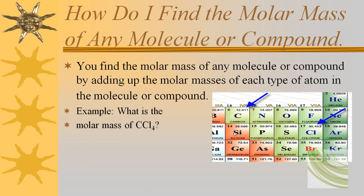Elements are pretty easy to find the molar mass of. What about compounds? In order to find the molar mass of a compound, you have to do a little bit more work. You find the molar mass of any molecule or compound by adding up the molar masses of each type of atom in the molecule or compound. For example, what is the molar mass of CCl4? Another name for that would be carbon tetrachloride. As you can see, it has one carbon atom and four chlorine atoms in it.